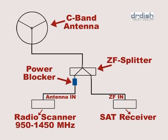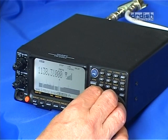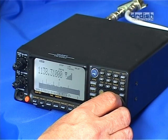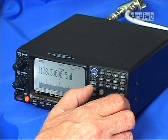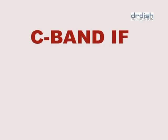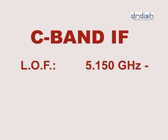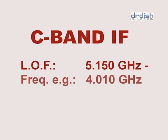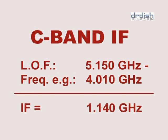Now the equipment is ready for reception. The IF frequency of C-band is between 950 and 1450 MHz. When we find a valid frequency of an SCPC signal on 4.010 GHz, we need to figure out the corresponding IF. Don't worry, it's not that difficult. The local oscillator frequency of C-band LMB is 5.150 GHz. We subtract the receiving frequency — in our case 4.010 GHz from 5.150 — and get as a result an IF of 1.040 GHz or 1040 MHz. And that's what we'll set the broadband receiver to.